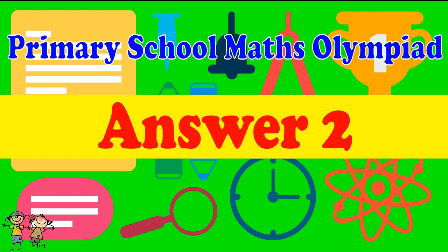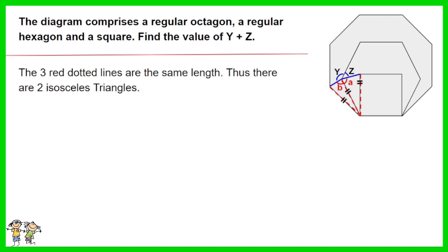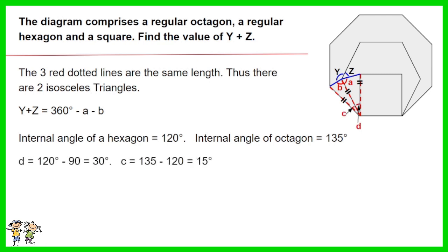Answer for Question 2: The three red dotted lines are the same length, thus there are two isosceles triangles. Y plus Z equals 360 degrees minus A minus B. The internal angle of a hexagon is 120 degrees. The internal angle of an octagon is 135 degrees. D equals 120 minus 90 equals 30 degrees. C equals 135 minus 120 equals 15 degrees.